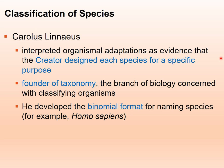Binomial nomenclature uses a binomial format that includes the genus and the species epithet. For example, 'Homo sapiens' — Homo is the genus and sapiens is the species epithet, but together they make up the species name. When typing them, they must both be in italics and the genus must be capitalized. When writing them, the genus is capitalized and the species epithet remains lowercase.